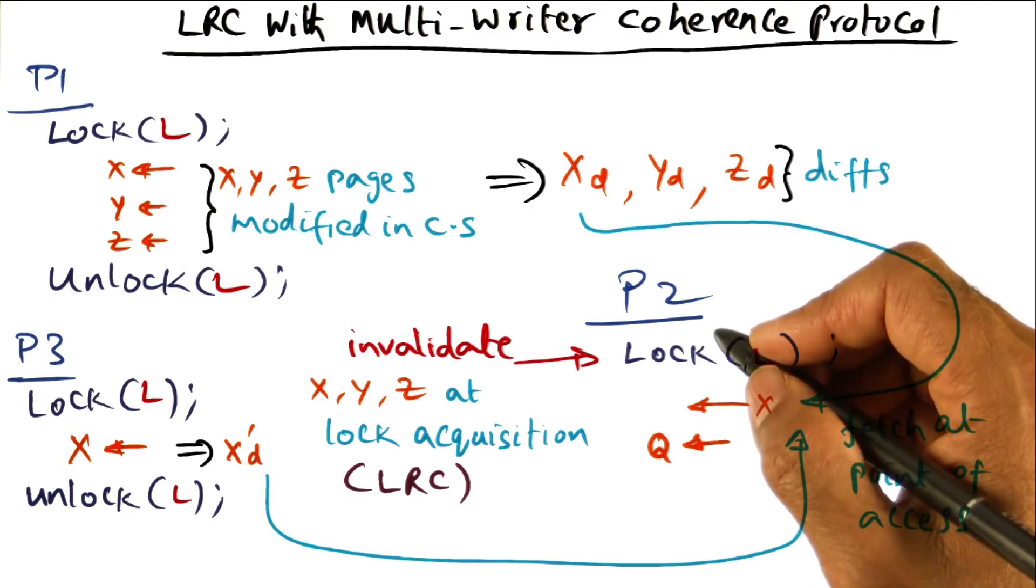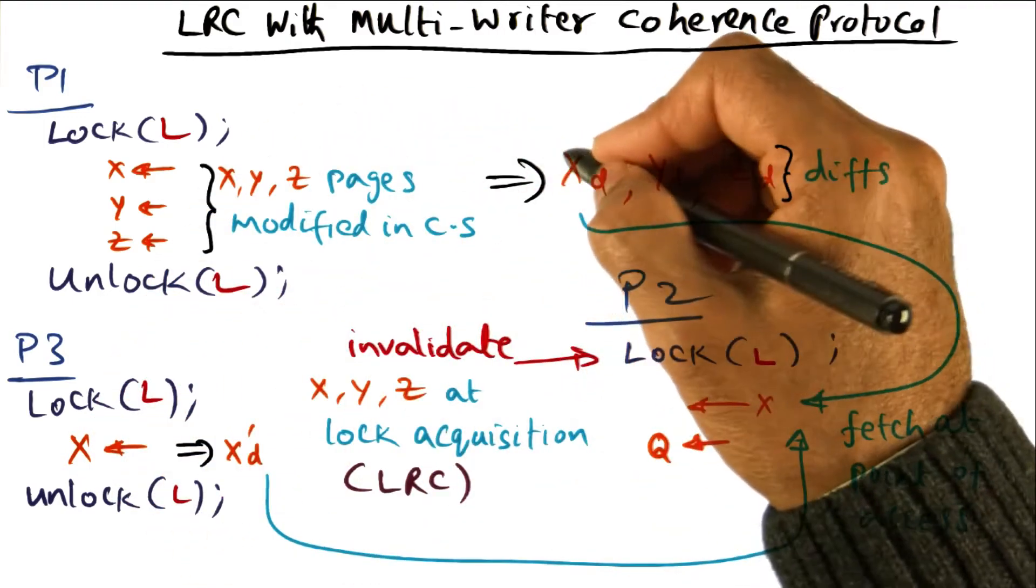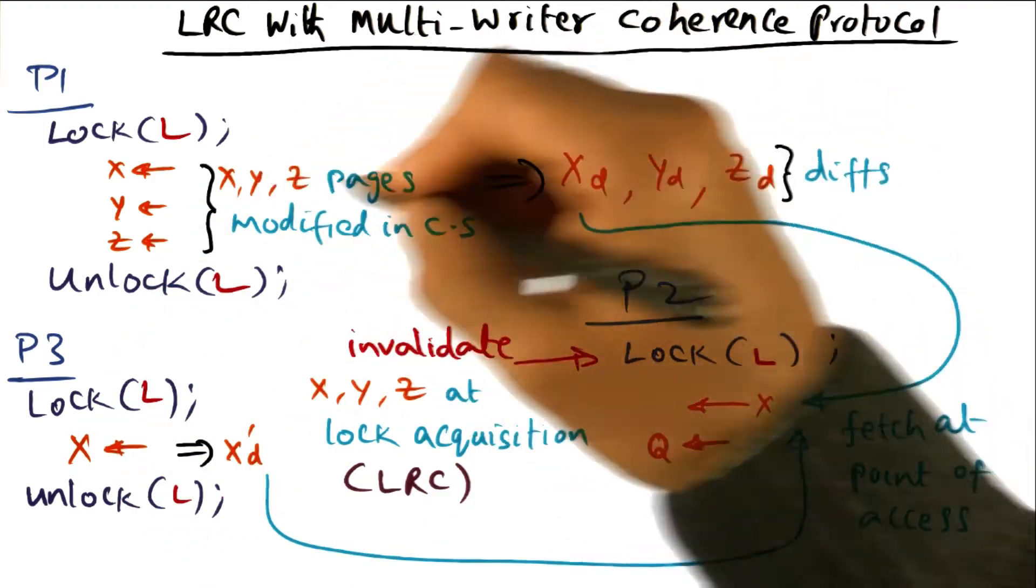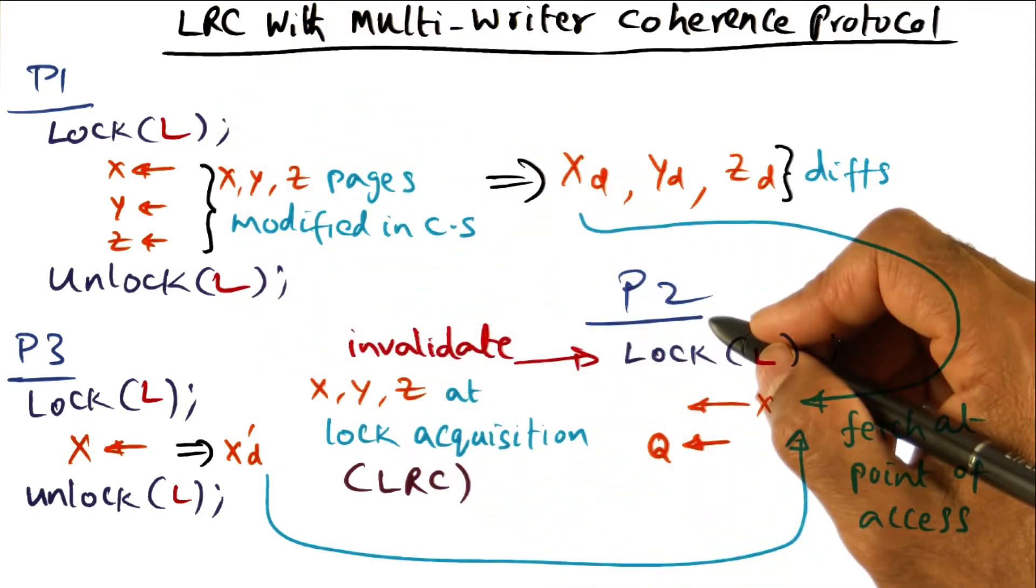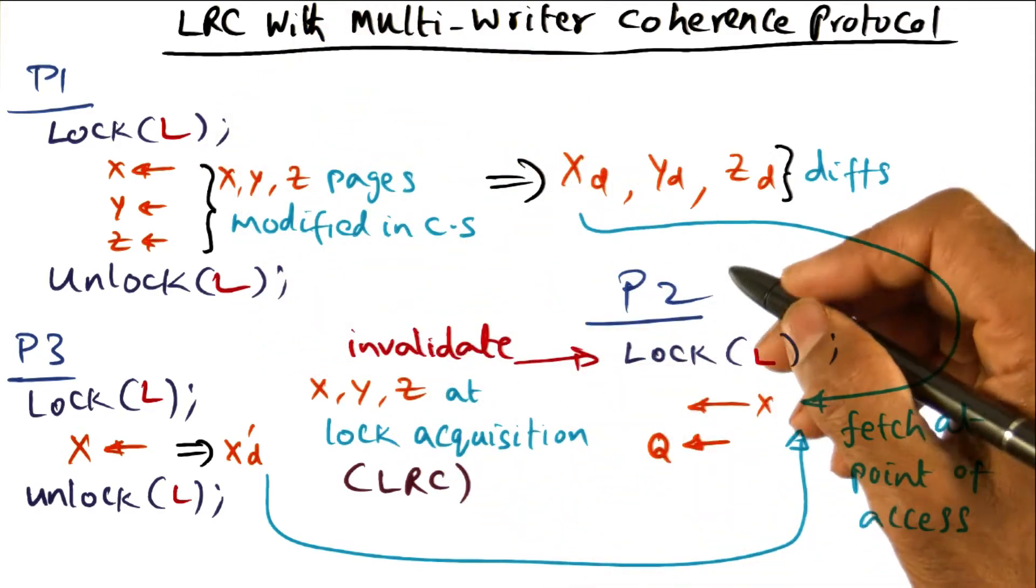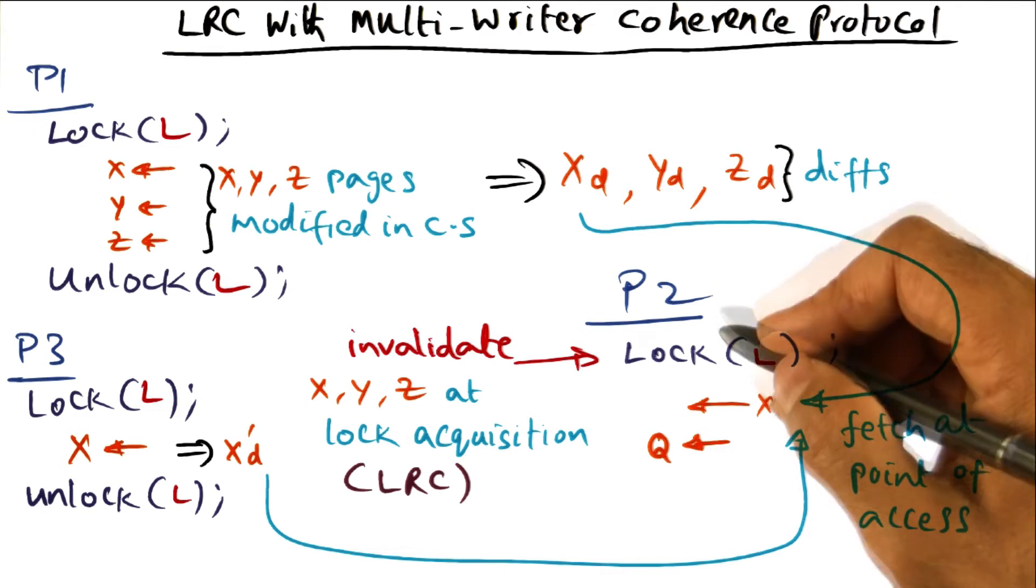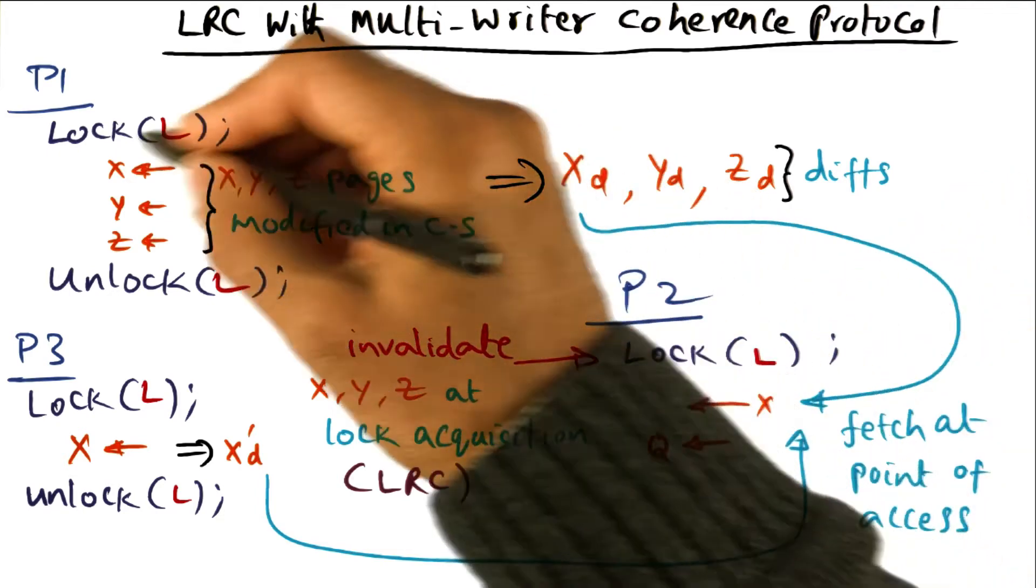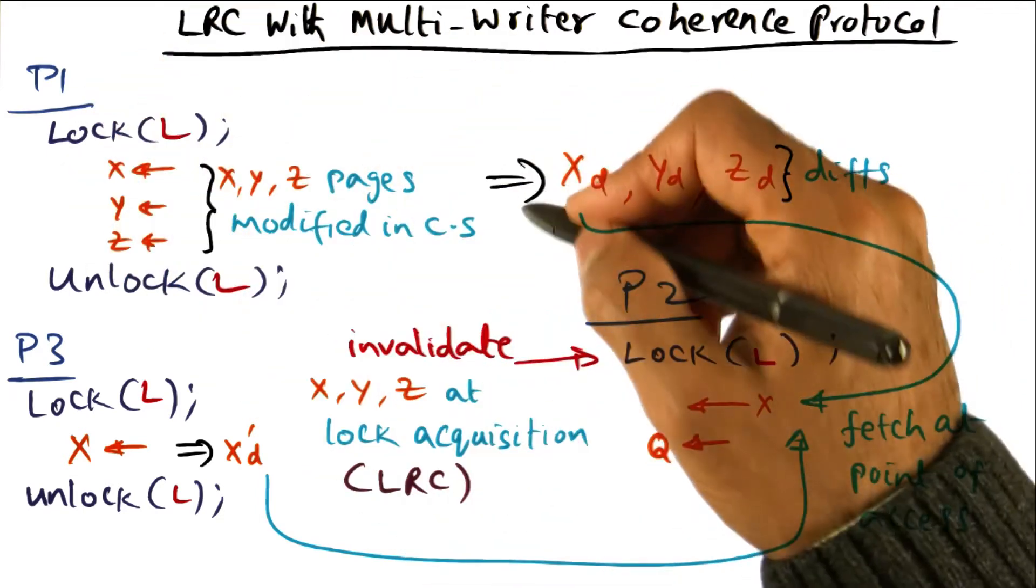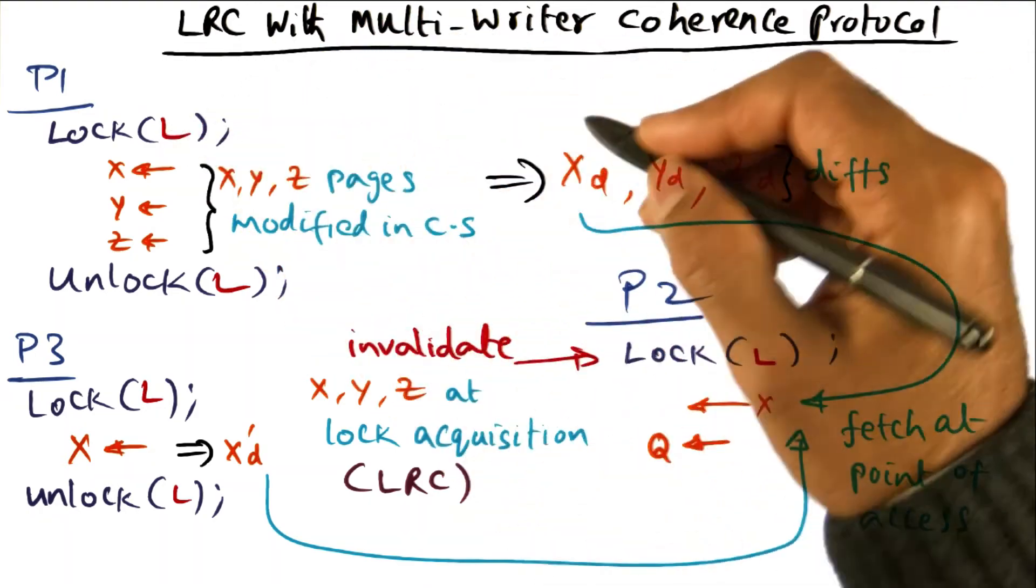The DSM software is not going to do anything in terms of the diffs that it has created with respect to the page x because of lock acquisition L. That's a completely different set of actions compared to a different lock acquisition, say L2. So if in fact that other thread that is running on P4 executed in parallel with P1, got its lock L2, and modified x.